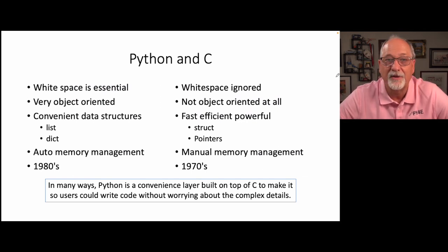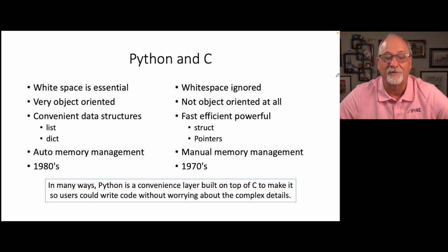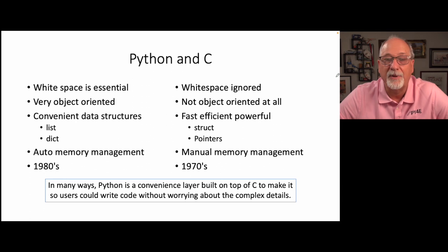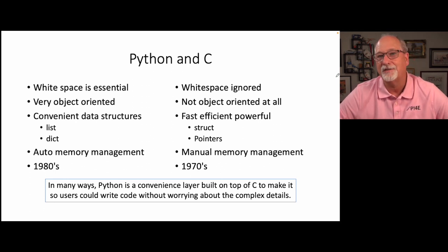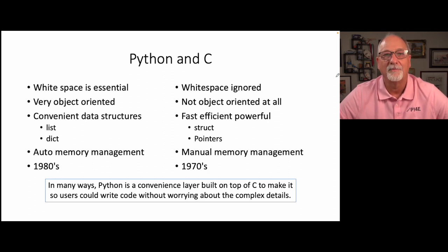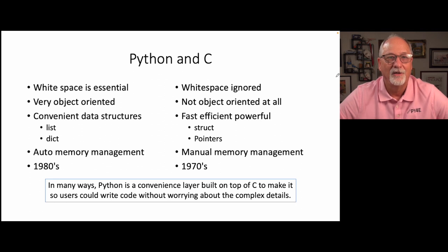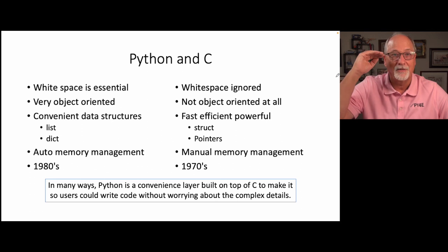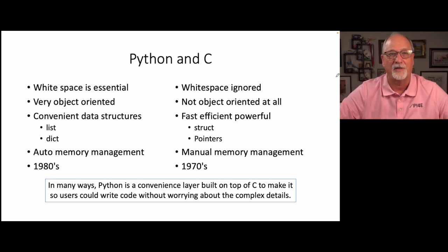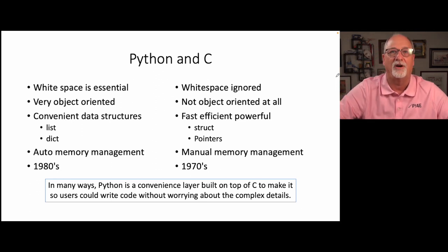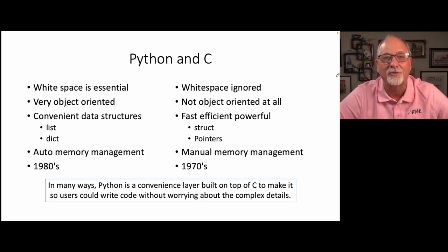You might think Python and C are very different, although Python is written in C. Python has whitespace as part of its syntax; in C, whitespace is ignored. Python is very object-oriented — if you read an article I wrote on Quora, I rank JavaScript and Python as the most object-oriented languages, Java is a little less object-oriented, and C is the least object-oriented. C is not object-oriented at all.